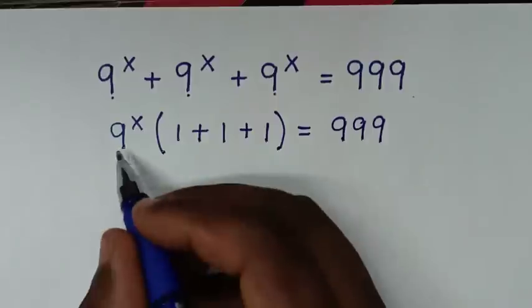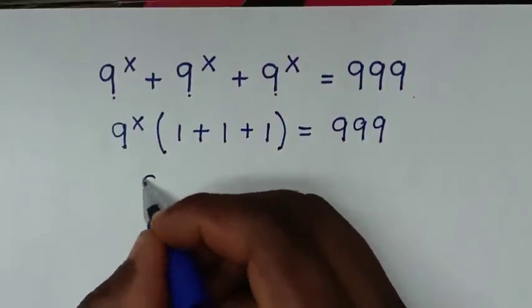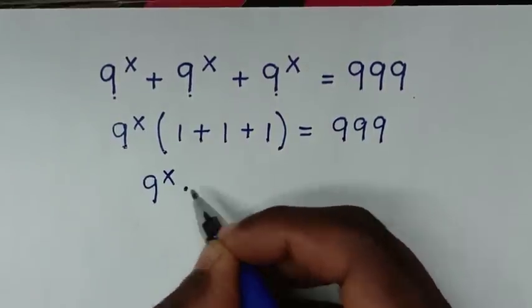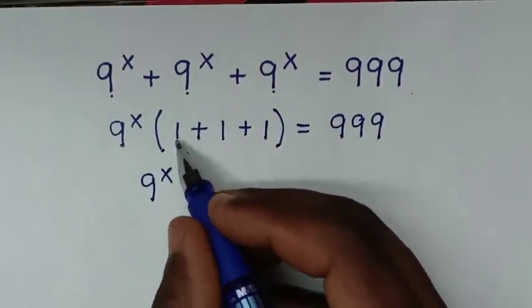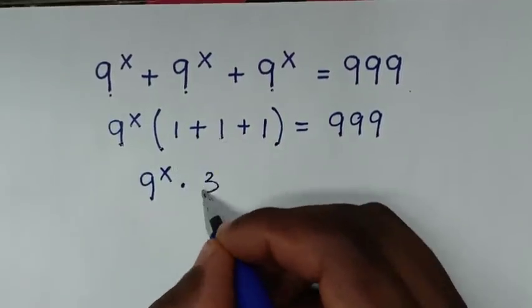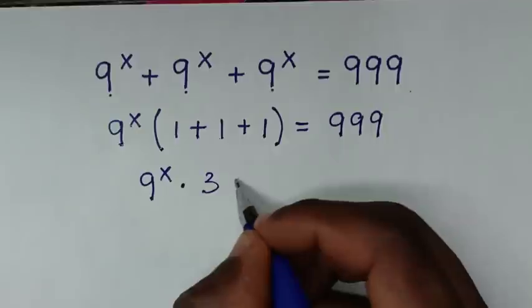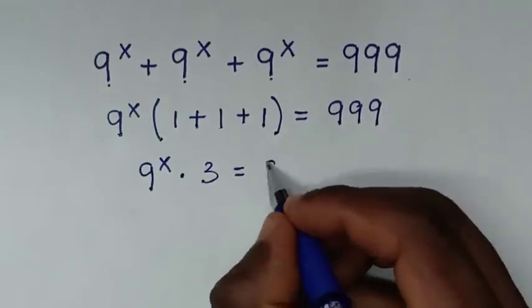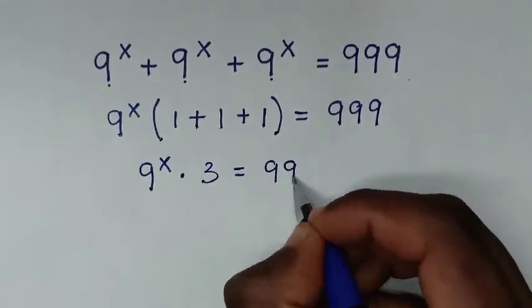Then in the next step it will be 9 power x times 1 plus 1 plus 1, which is 3, then is equal to 999.